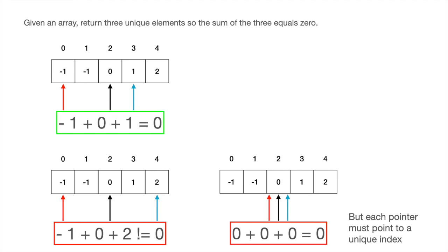The second example has indices of zero, two, and four, which represent elements of minus one, zero, and two, which sum to one, which clearly isn't zero. So those candidate indices are incorrect.